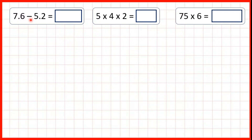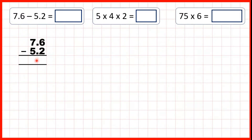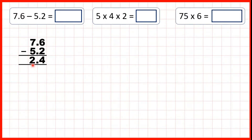7.6 minus 5.2. So, we can set this out as a column subtraction, making sure that we've got our decimal points lined up, because if our decimal points are lined up, that means our 1s and 10ths columns will be lined up as well. Let's copy the decimal point down into our answer so that's lined up as well. 6 minus 2 is 4. 7 minus 5 is 2. So, our answer is 2.4.